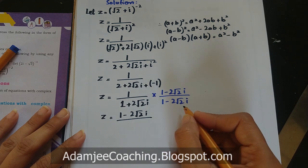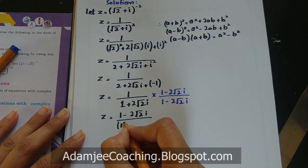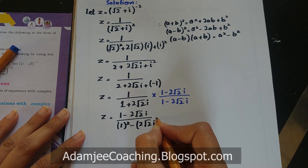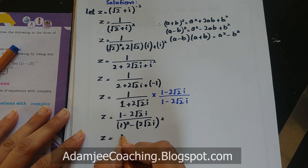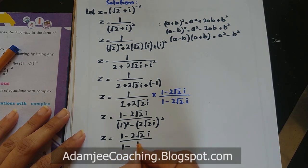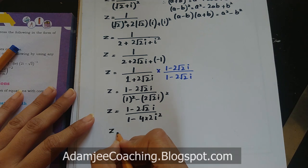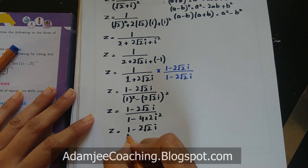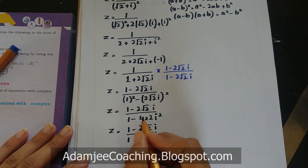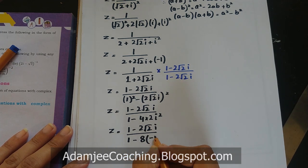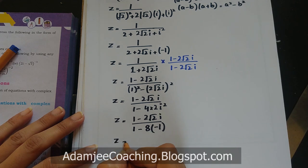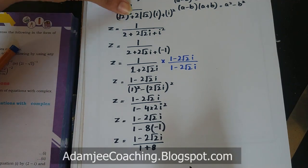Denominator میں (a+b)(a-b) = a²-b² formula apply ہوگا۔ a = 1، b = 2√2·iota، تو z = (1 - 2√2·iota) upon (1² - (2√2·iota)²) = (1 - 2√2·iota) upon (1 - 4×2×iota²). iota² = -1 رکھیں تو denominator = 1 + 8 = 9۔